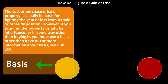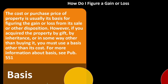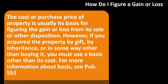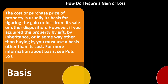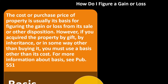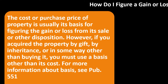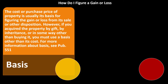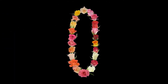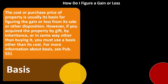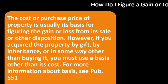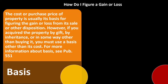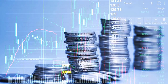Basis: the cost or purchase price of property is usually its basis for figuring gain or loss. However, if you acquired the property by gift, inheritance, or some other means, you must use a basis other than cost — see Publication 554 for more. If someone gifted you the property, your basis isn't zero just because you didn't pay for it. You might use the basis of the person who gave it to you, or in the case of inheritance, possibly the fair market value at the time of receipt.